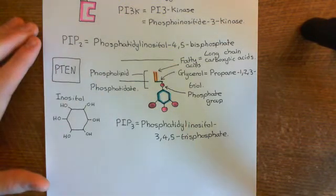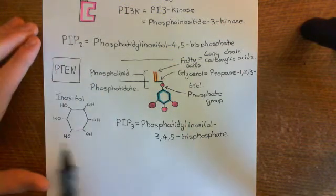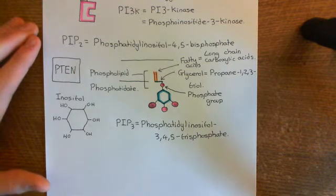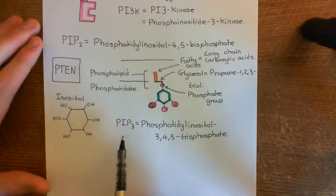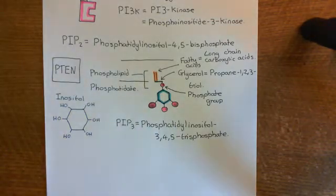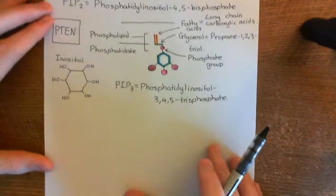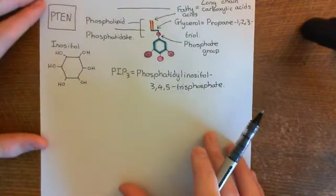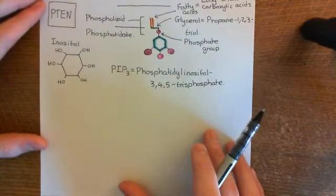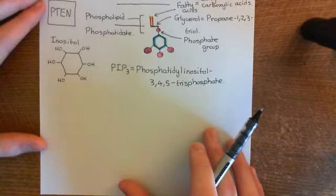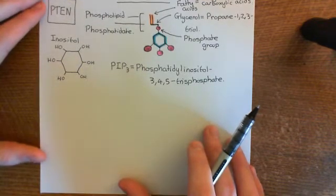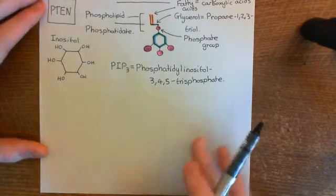However, when we activate PI3 kinase, for a moment you will get a transient rise in PIP3 in the membrane. So for a moment there's going to be PIP3 in the membrane. What is this PIP3 going to do? It's going to recruit certain enzymes to the phospholipid bilayer.